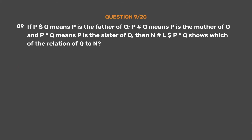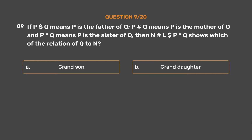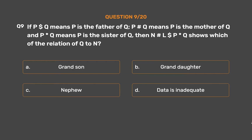Question number 9. If P $ Q means P is the father of Q, P # Q means P is the mother of Q, and P @ Q means P is the sister of Q, then N $ L $ P @ Q shows which relation of Q to N? Option A: Grandson. Option B: Granddaughter. Option C: Nephew. Option D: Data is inadequate.